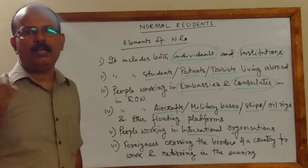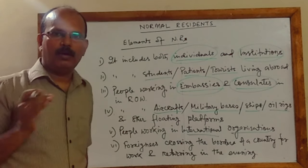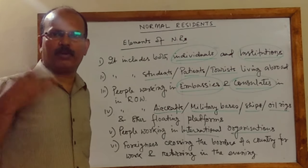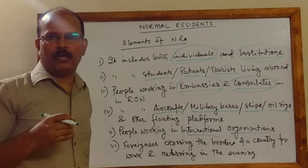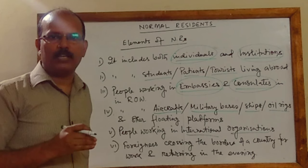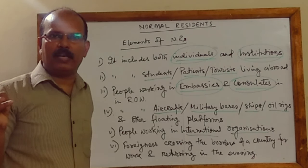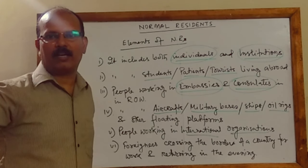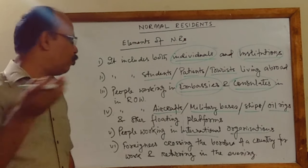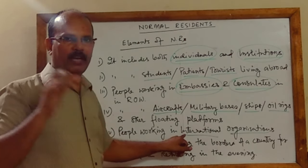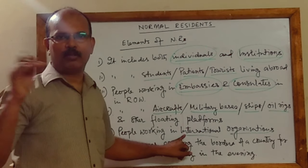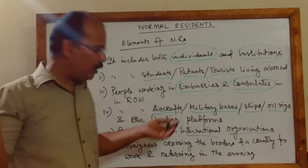People working in international organizations like IMF, WHO, and UNICEF are also considered normal residents. For example, an Indian national working in IMF and staying in the USA will be a normal resident of India, because even though he is staying in the USA for more than one year, his economic interest does not belong to that country — he is getting salary from an international organization.